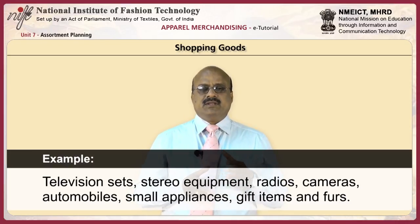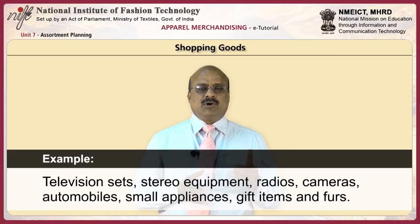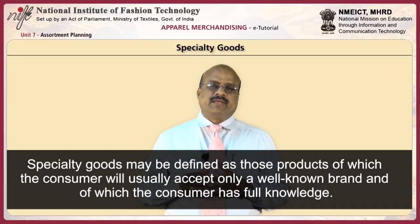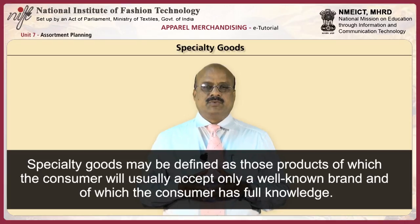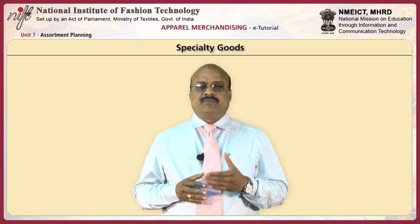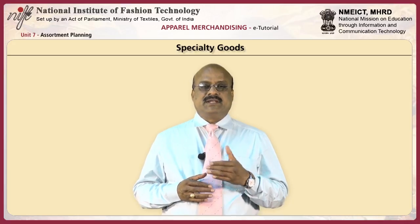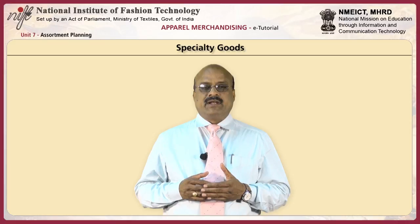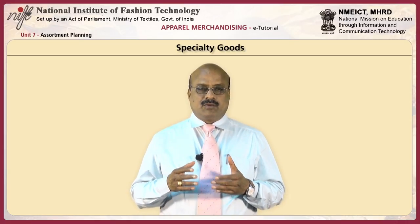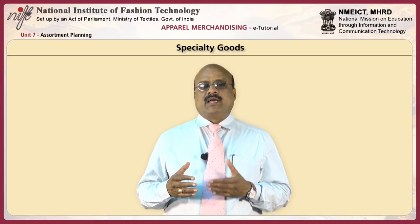Examples of shopping goods are television sets, stereo equipment, radios, cameras, automobiles, small appliances, gift items, and furs. Specialty goods may be defined as goods of which the consumer will usually accept only a well-known brand and of which the consumer has full knowledge. For example, a buyer of fine china is providing specialty merchandise — the consumer may wish to increase a set of chinaware and will return to the store for a particular pattern or design. Buyers of specialty goods will plan to have as wide an assortment as possible, since consumers will be satisfied once they locate the specific item.